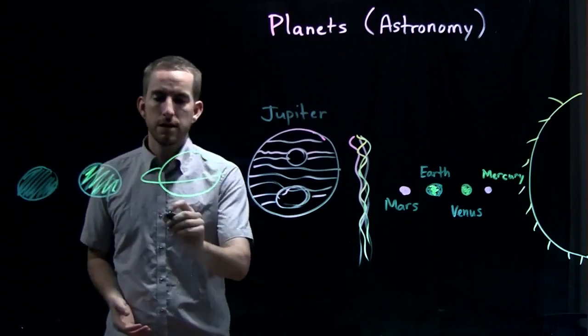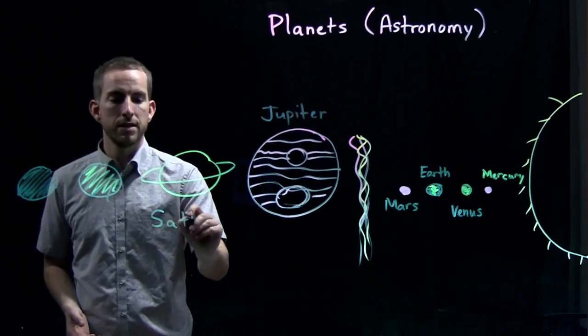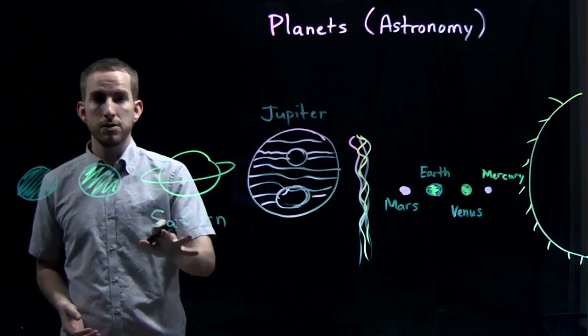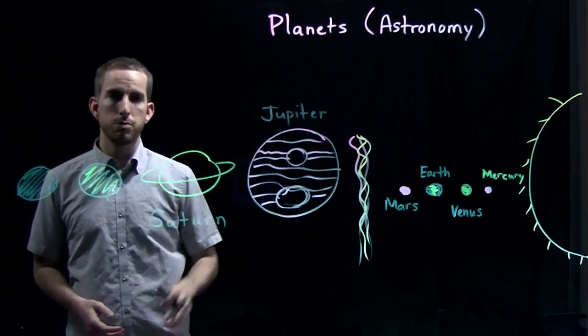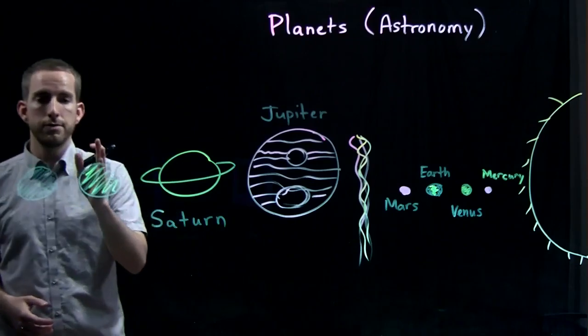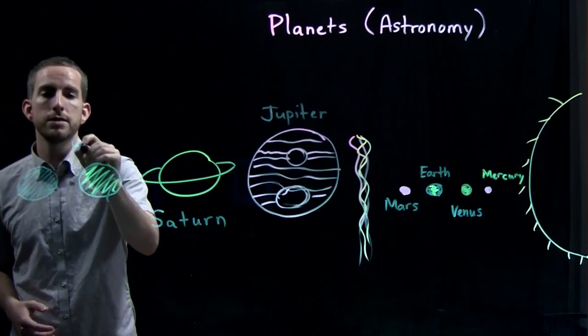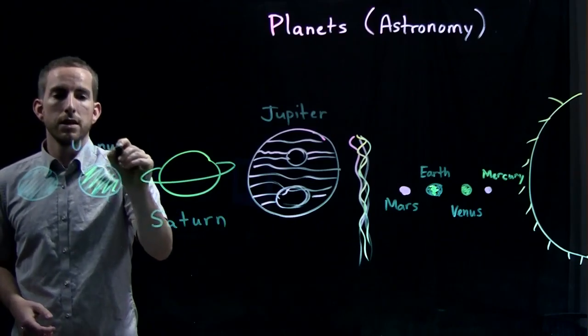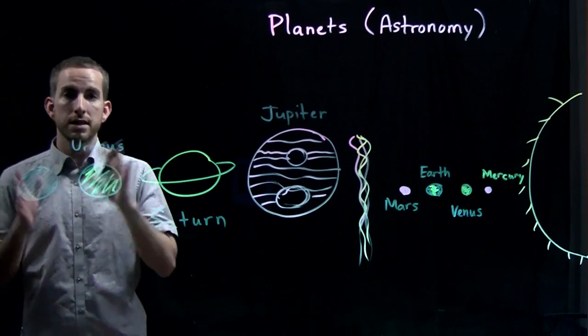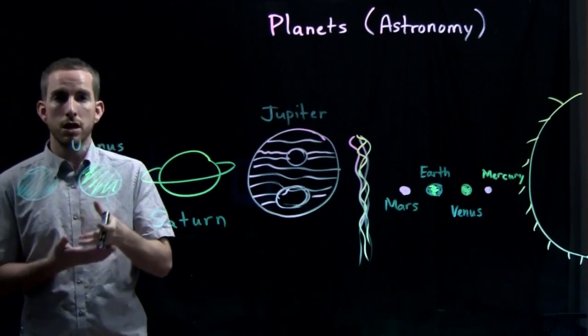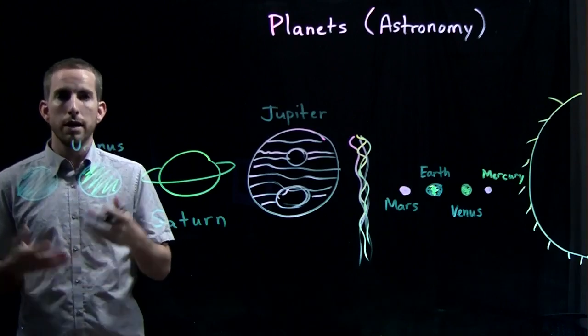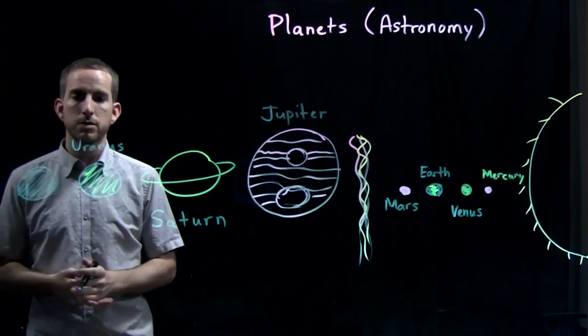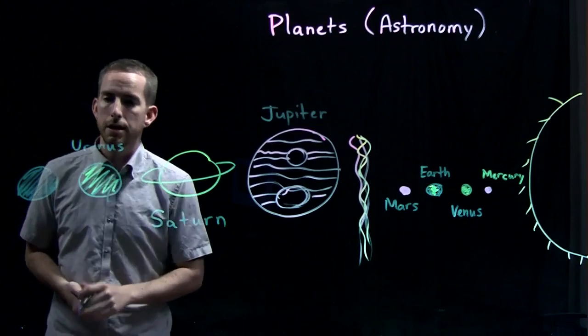The next one is Saturn. Saturn was a goddess. I think she was the wife of Jupiter. Next we have Uranus. Uranus was the god of the sky. So in Korean 천왕. So 천 like 천국 means heaven or sky. So he was the god of the sky.